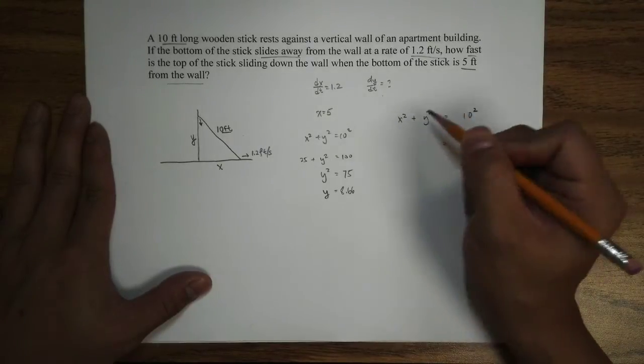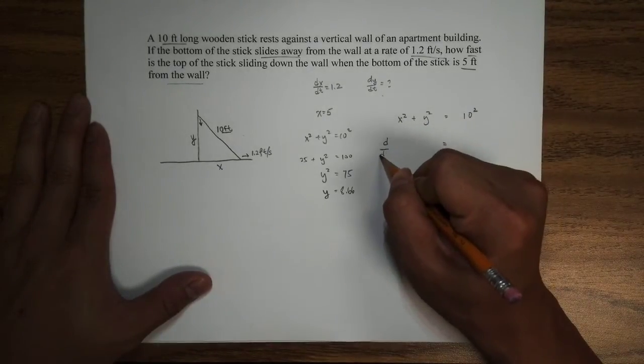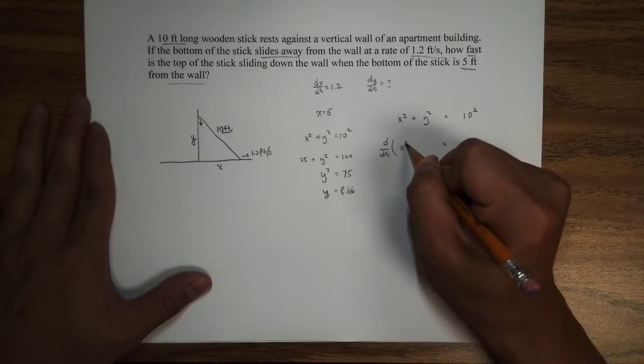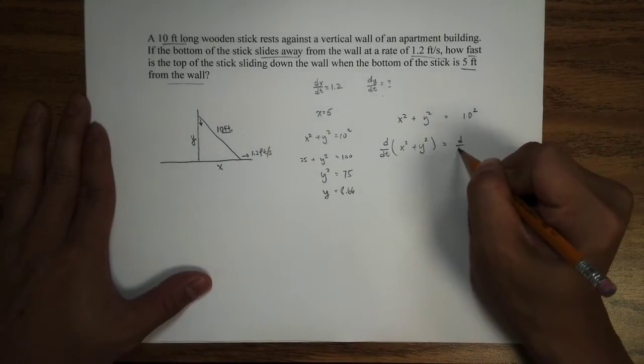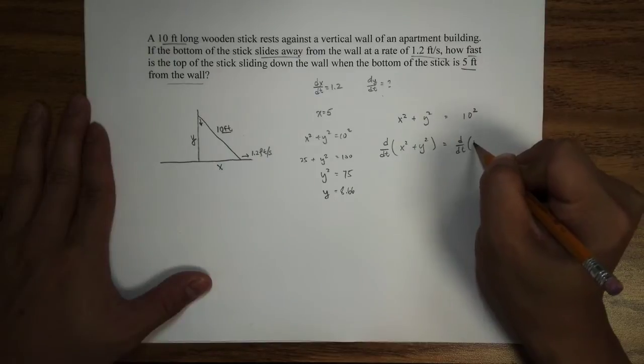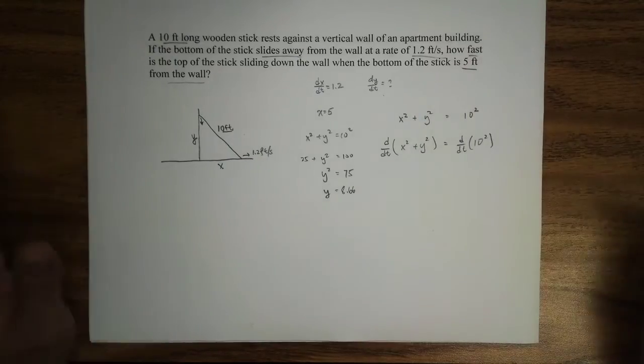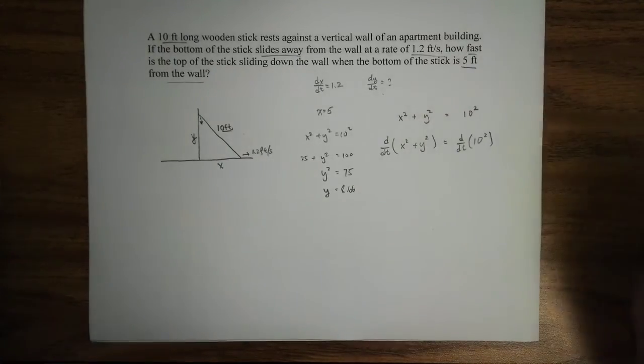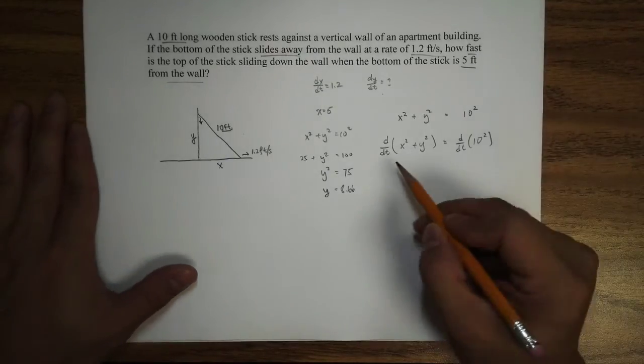And now, this is how I do my notation. So, I'm going to differentiate both sides with respect to t, because we are looking at how fast. So, we are looking at the change over time.